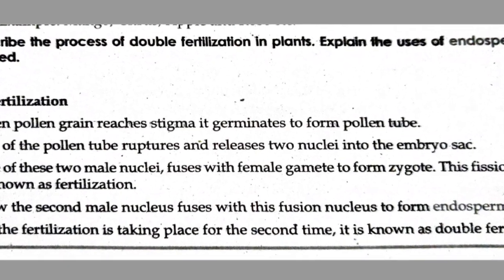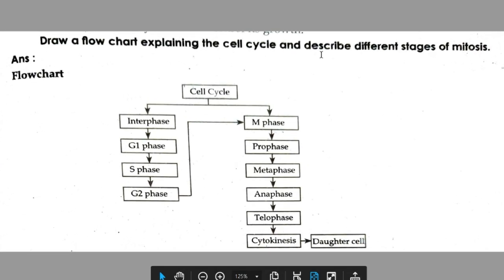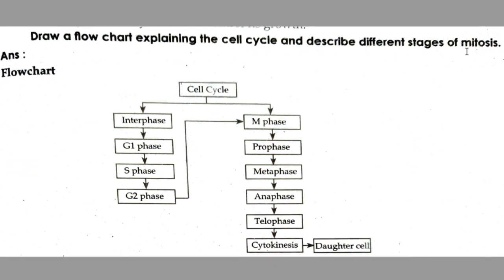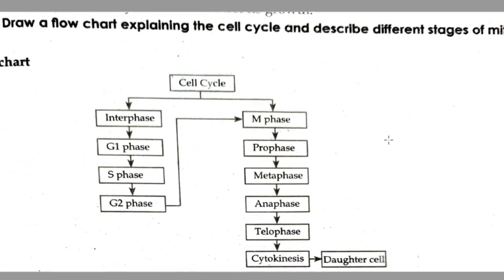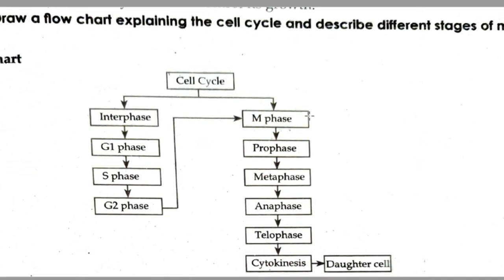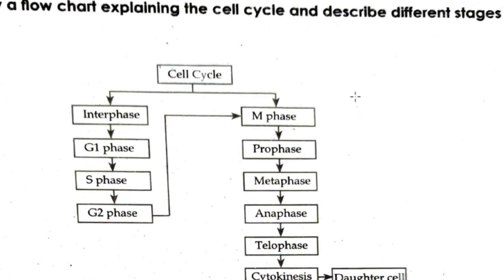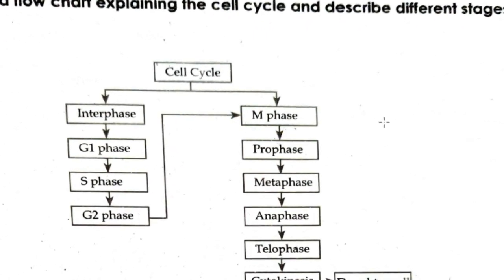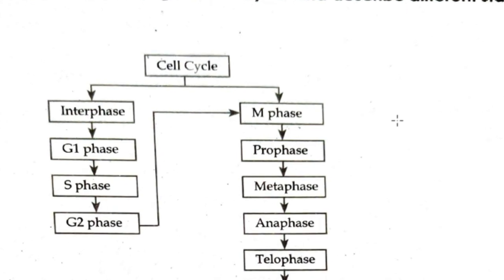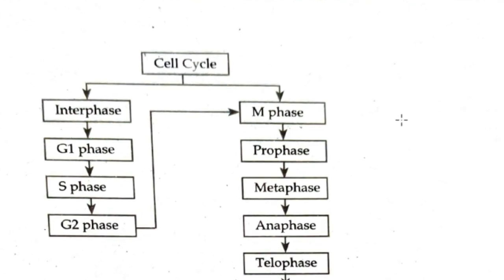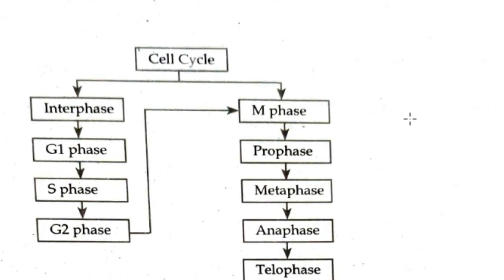Draw a flow chart explaining the cell cycle and describe different stages of mitosis. This is the flow chart — compulsory mitosis answer in detail is very important. You can note the flow chart, but with the textbook clone the mitosis answer, which is a definite expected question. Have a glance at that question.